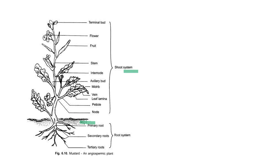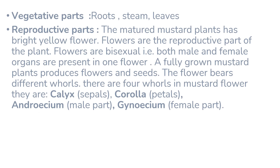The shoot system consists of stem, leaf, fruit, flower, and terminal bud. The stem has nodes and internodes. The stem then gives rise to leaves and flowers. The flower matures into a fruit or seed.